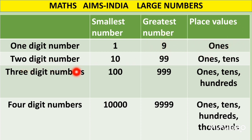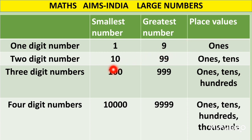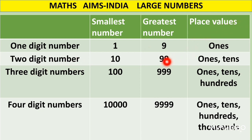Coming to two digit numbers, the smallest two digit number is ten. We have nine as the greatest one digit number. If we add one to nine, we get ten. Nine plus one equals ten. This ten becomes the smallest two digit number. Two digit numbers end at ninety-nine, so ninety-nine becomes the greatest two digit number. Two digit numbers have two place values: ones and tens.